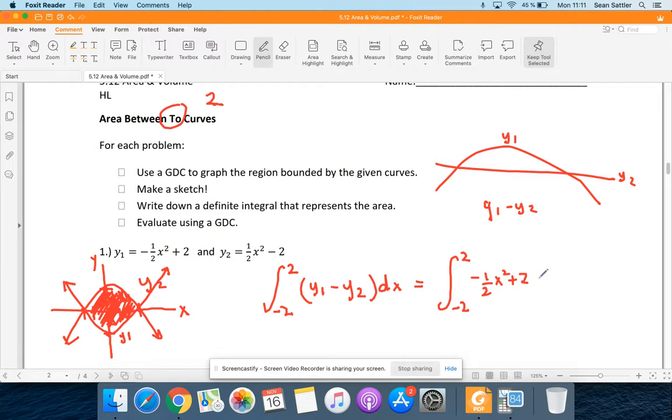So minus one-half x squared plus two with respect to x. And then we could simplify it a little bit more and say, well, negative one-half x squared minus one-half x squared.